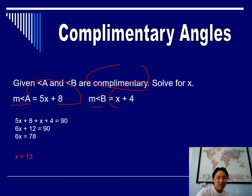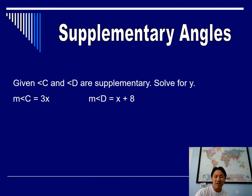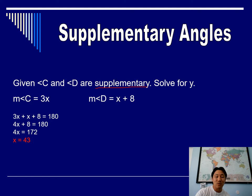Now let's do one for supplementary angles. If they're supplementary, they add up to 180. So: 3x + (x + 8) = 180. Combine like terms, subtract 8, divide by 4, and you get x equals 43. That's all we have for today — go ahead and start on your homework.